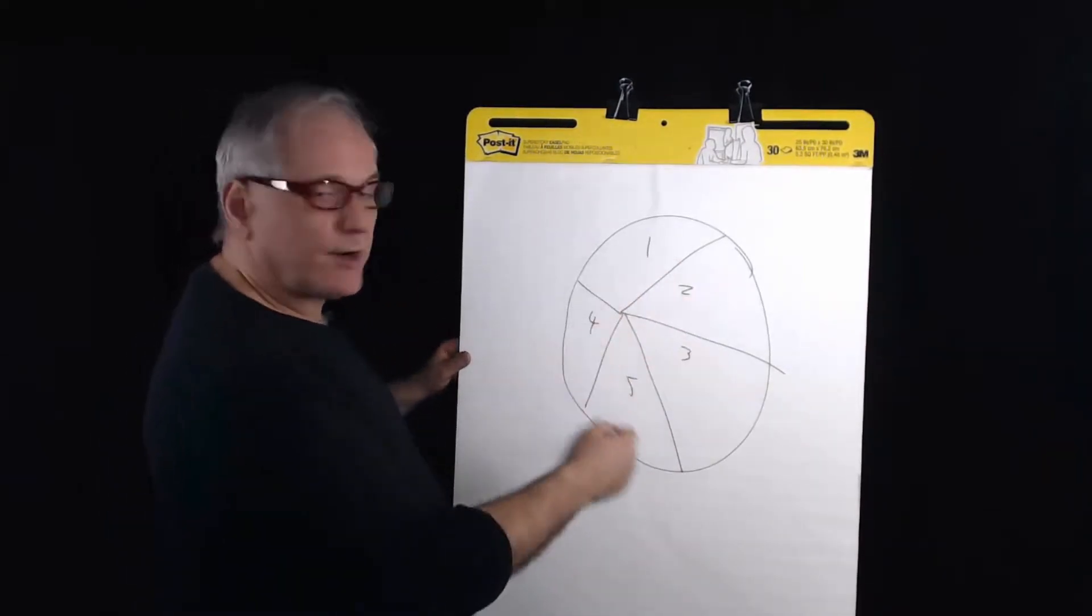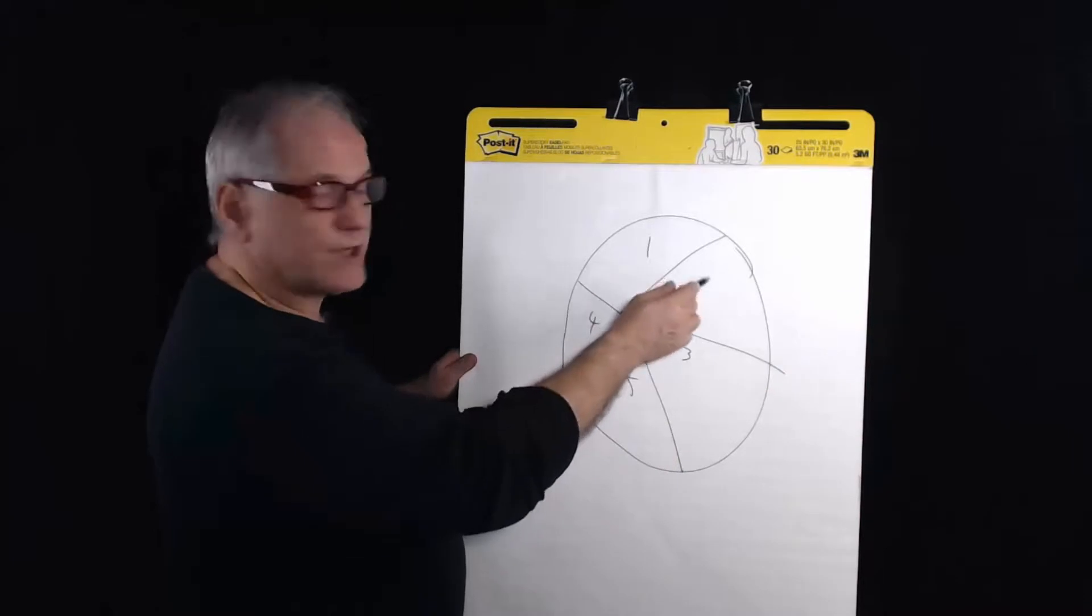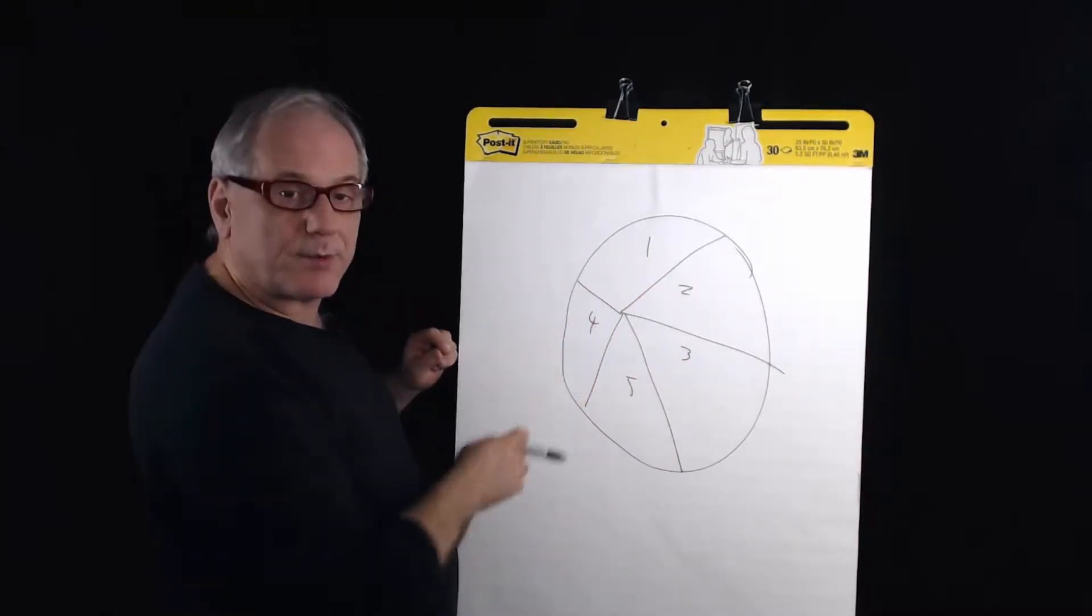Make sense so far? So these are territories that you could capture. You could give these names. You could call this Toronto, this Mississauga, this Scarborough, etc.